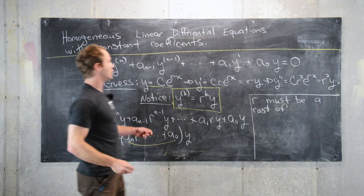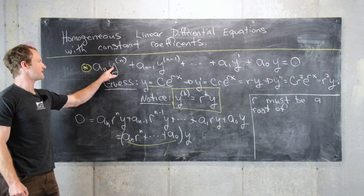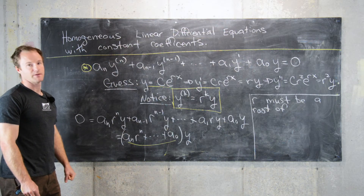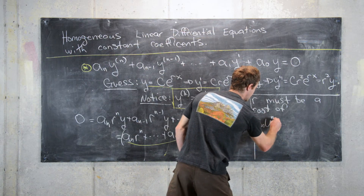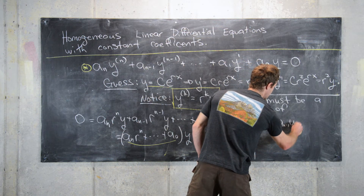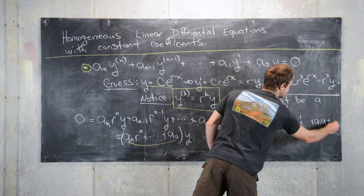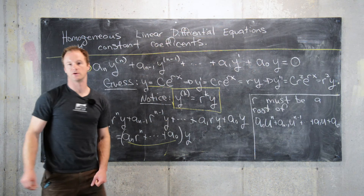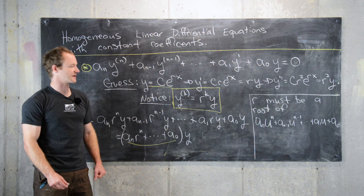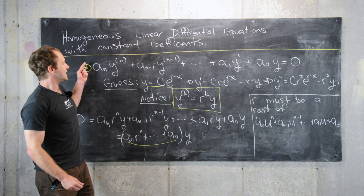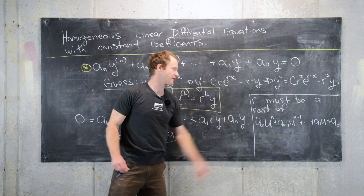This polynomial looks exactly like our differential equation but with derivatives replaced by powers of a variable u: a_n·u^n + a_{n−1}·u^(n−1) + ⋯ + a_1·u + a_0 = 0. In a following video we'll work through examples, but the key insight is: we've reduced finding a solution to this differential equation to finding the roots of a polynomial.